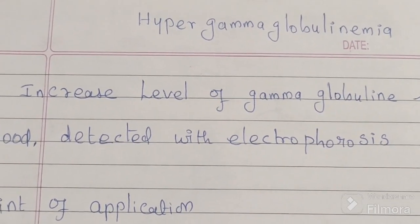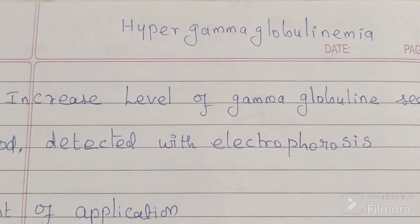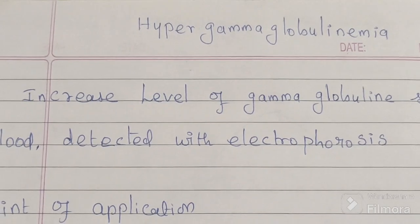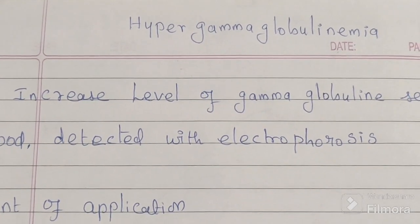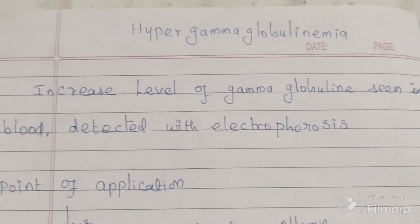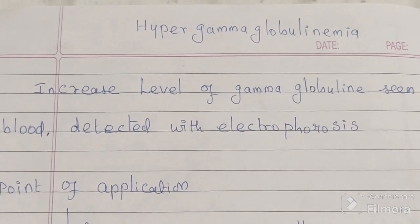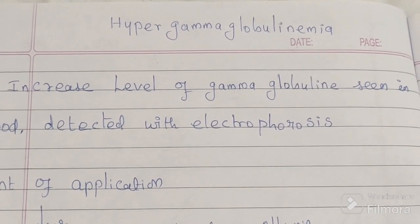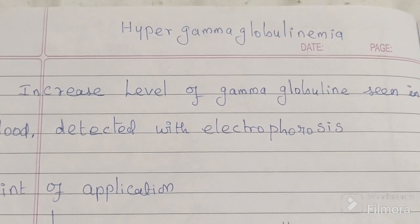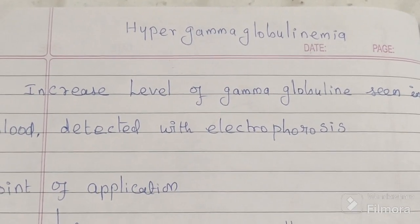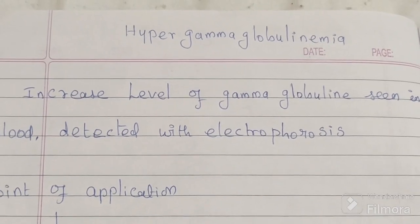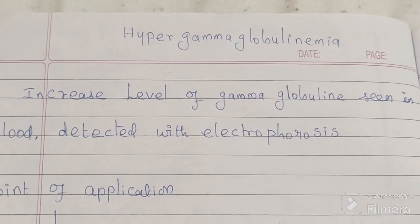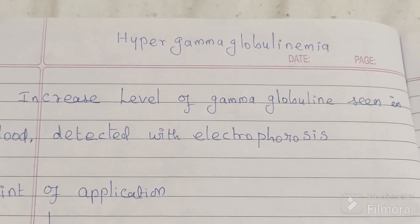In this video, we will discuss hypergammaglobulinemia. What is hypergammaglobulinemia? Basically, it is an increased level of gamma globulin seen in the blood. It is detected with electrophoresis, and we will look at in which conditions it is increased.